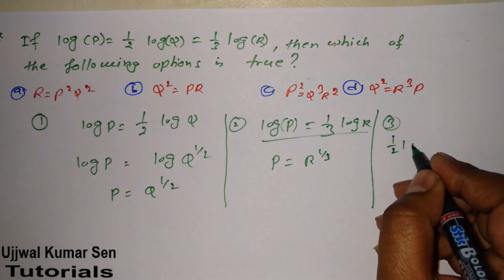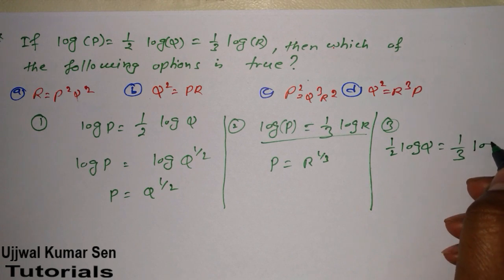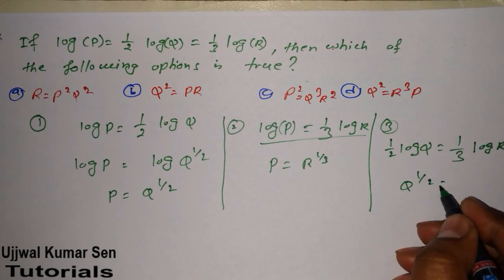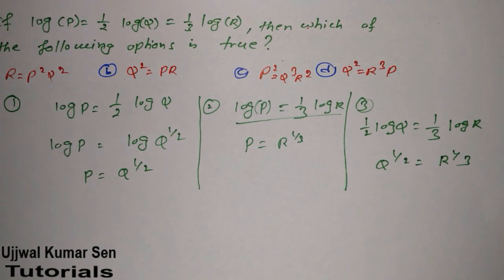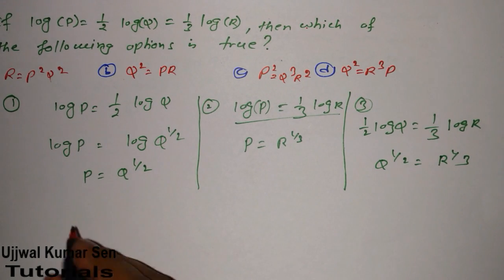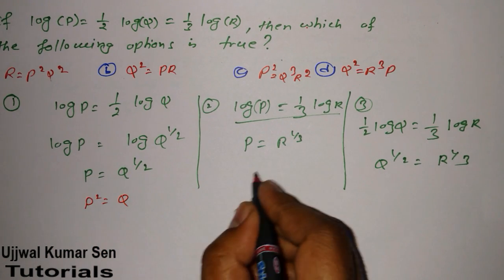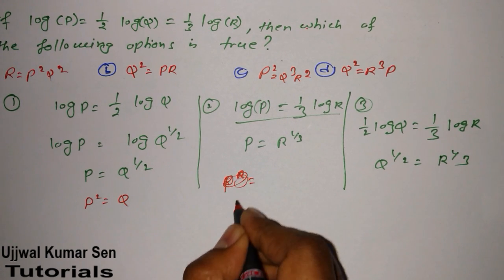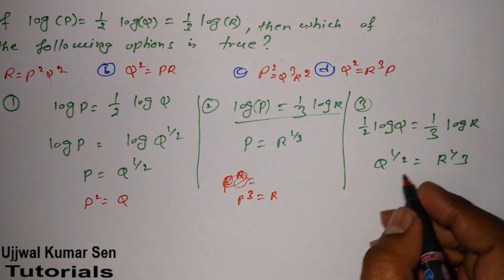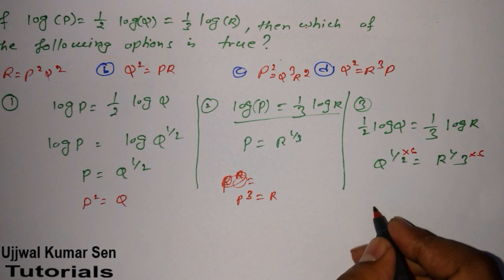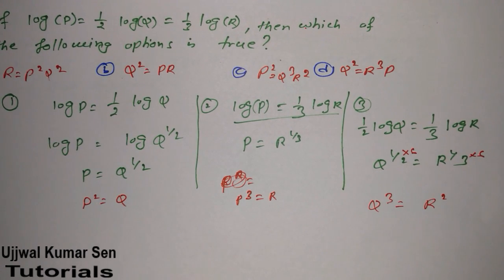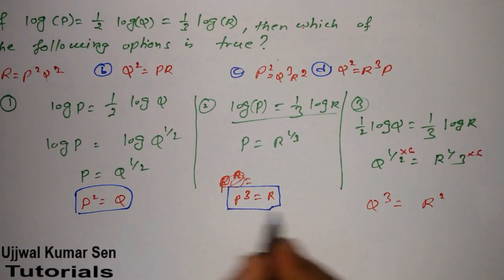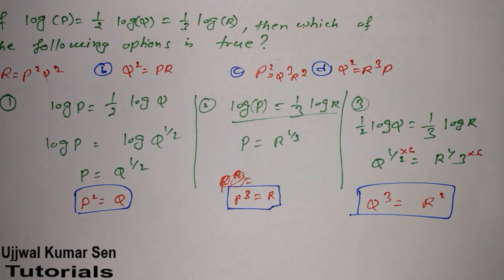A third relation: ½ log q = ⅓ log r, therefore q^(1/2) = r^(1/3). From these three relations I can simplify further: p² = q, and multiplying both sides by 6 we get q³ = r². These three relations — p² = q, p³ = r (approximately), and q³ = r² — can help us find the right answer among the given options.